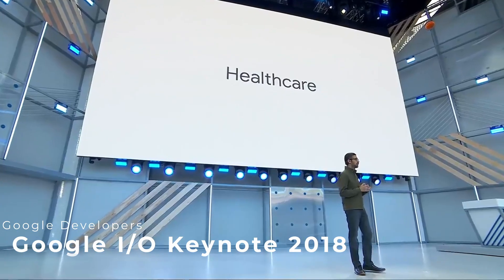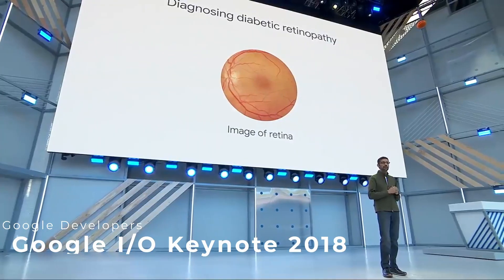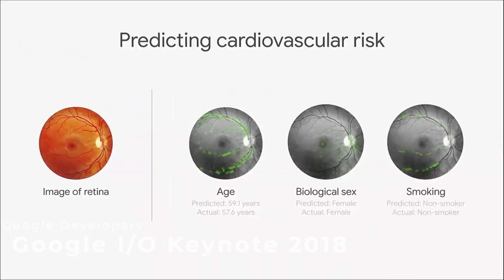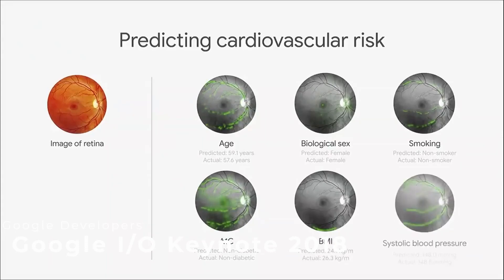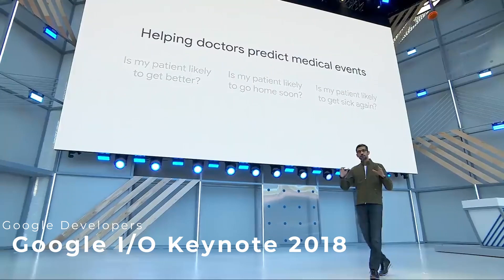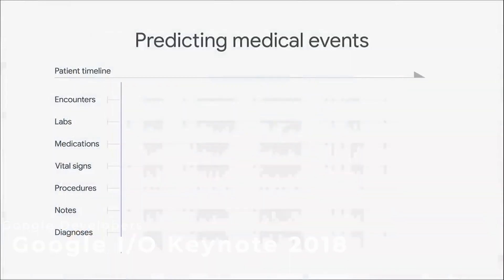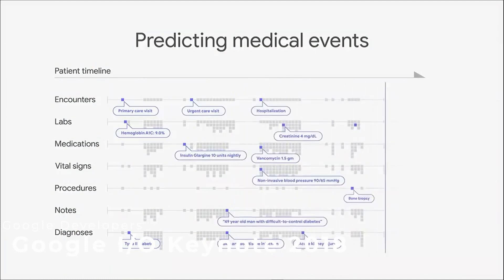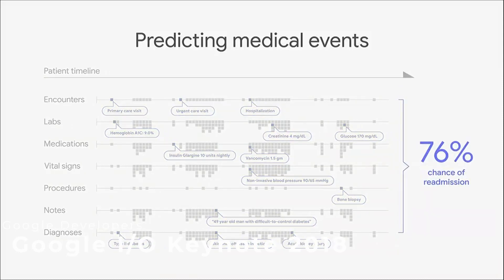Healthcare is one of the most important fields AI is going to transform. Google announced work on diabetic retinopathy, using deep learning to help doctors diagnose it. They can predict the five-year risk of an adverse cardiovascular event — heart attacks or strokes. By analyzing over 100,000 data points per patient, they can quantitatively predict the chance of readmission 24 to 48 hours earlier than traditional methods, giving doctors more time to act — just by taking pictures of the back of the eyes.